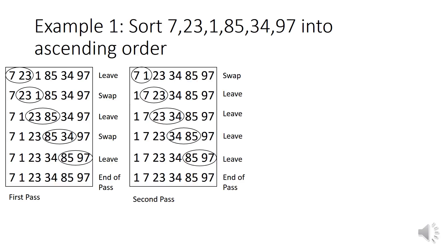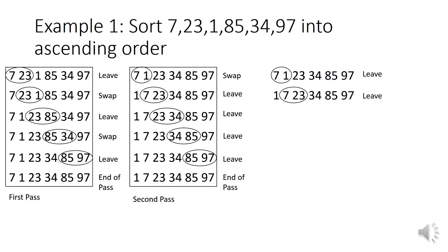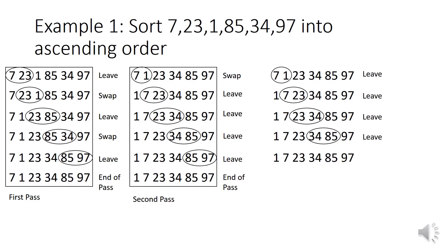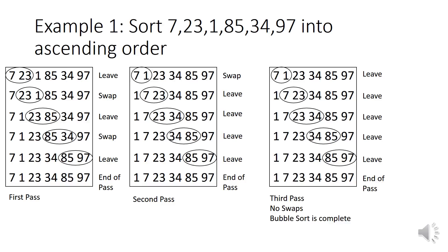As you can see they are in order, however we can't stop there. The bubble sort is an algorithm, and algorithms are mainly designed so that they can be implemented into computers. A computer can't just look at the list and say it's sorted — otherwise we wouldn't need the algorithm — so it doesn't actually know that it's sorted yet. In order for the computer to know it's sorted it needs to do a whole pass without any swaps. So we need to do a third pass even though we won't be swapping any values, but we need to do this to show that the list is sorted. As you can see on the third pass we do not swap any values, so the bubble sort is complete.